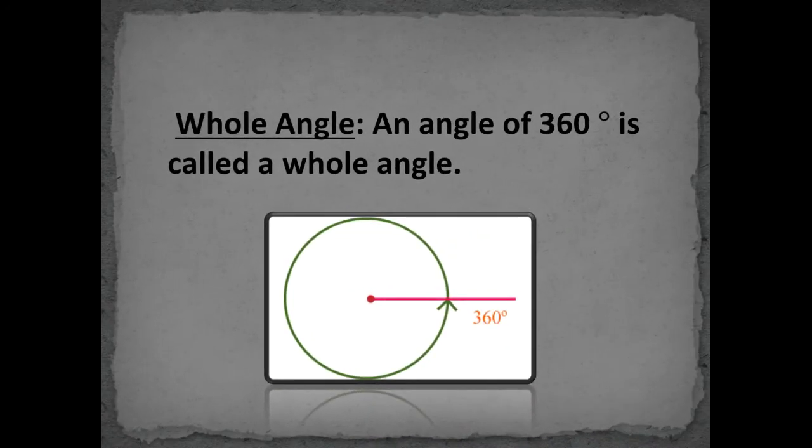The next is the whole angle. An angle whose measure is exactly 360 degrees is called a whole angle. We also call it a full angle.